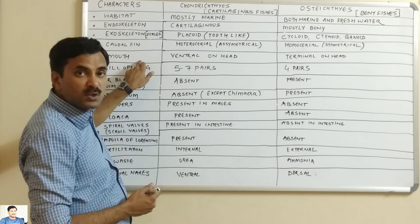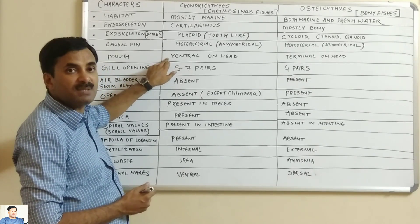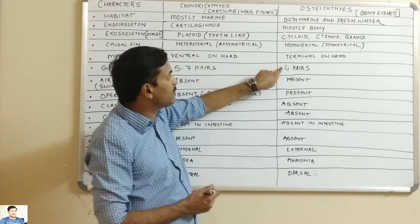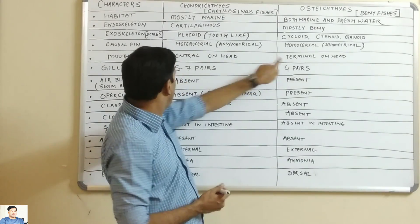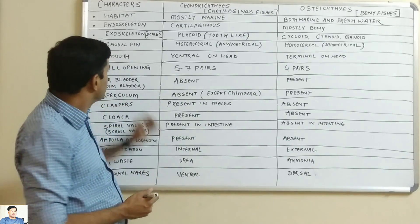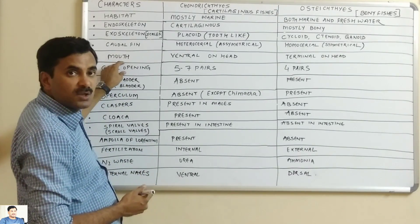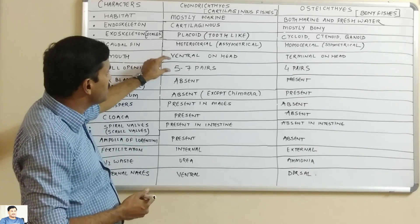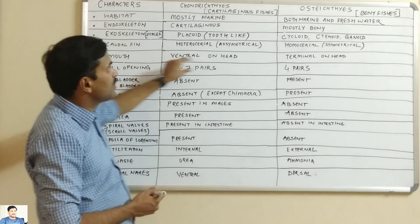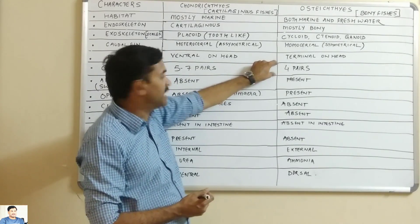Now what about the mouth? In cartilaginous fishes, the mouth is always ventral on the head — its position is ventral. In bony fishes, the position of the mouth is terminal on the head. Regarding gill openings, cartilaginous fishes have 5 to 7 pairs, while bony fishes have only 4 pairs.